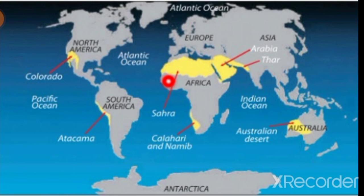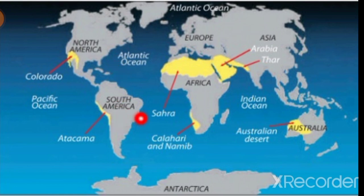Question number four: Which one of the following deserts is located in the western coast of North America? A. Atacama Desert. B. Sahara Desert. C. Colorado Desert. D. Arabian Desert.